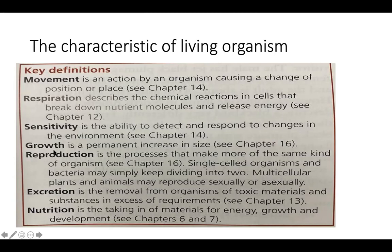The next characteristic is growth — a permanent increase in size, for example in height. After that, reproduction is a process that makes more of the same kind of organism. Reproduction should occur within the same species, for example human and human. Reproduction can be either sexually or asexually, which we will discuss in detail in the next chapter.